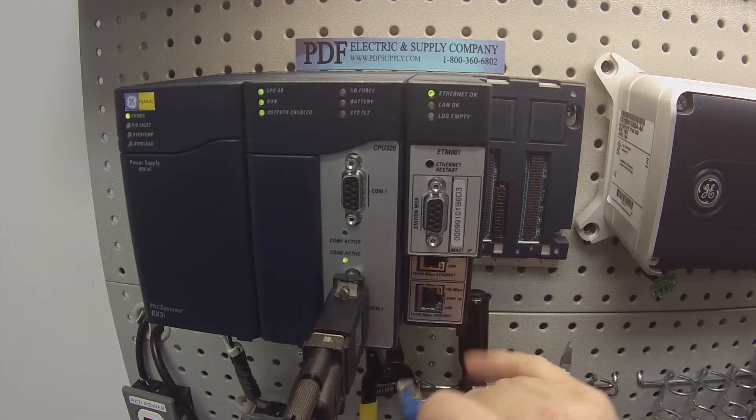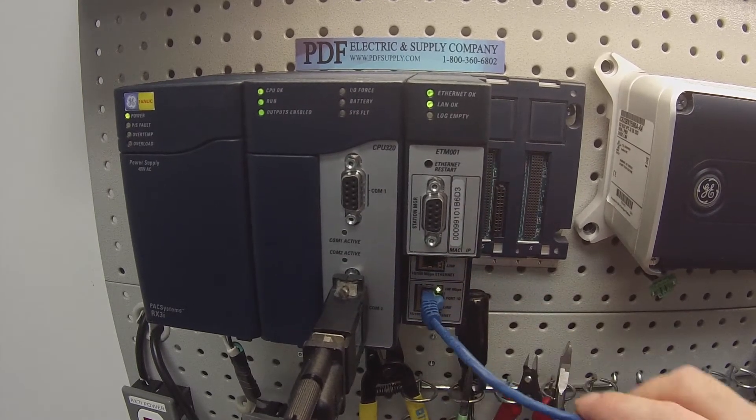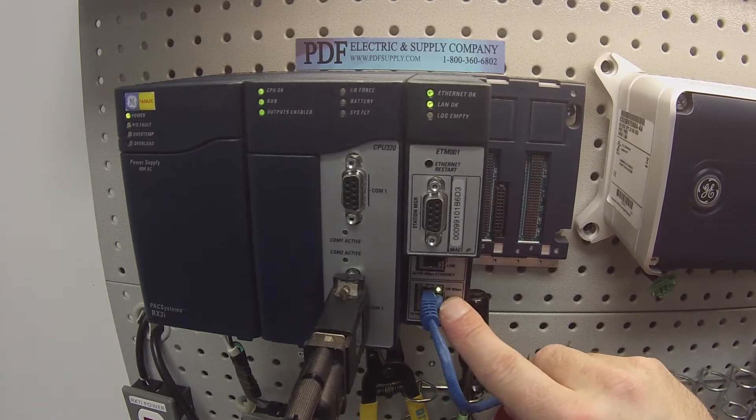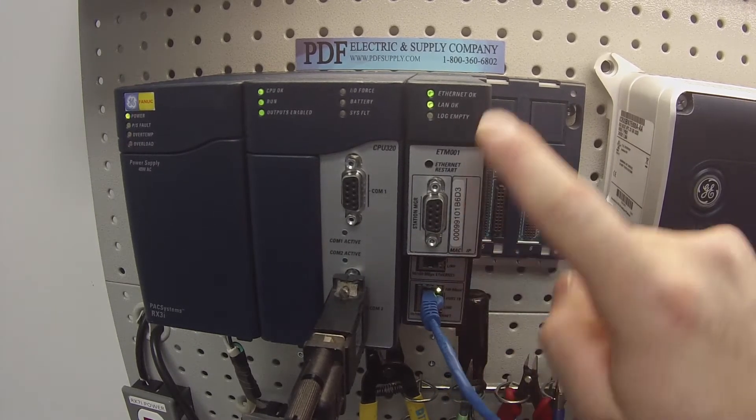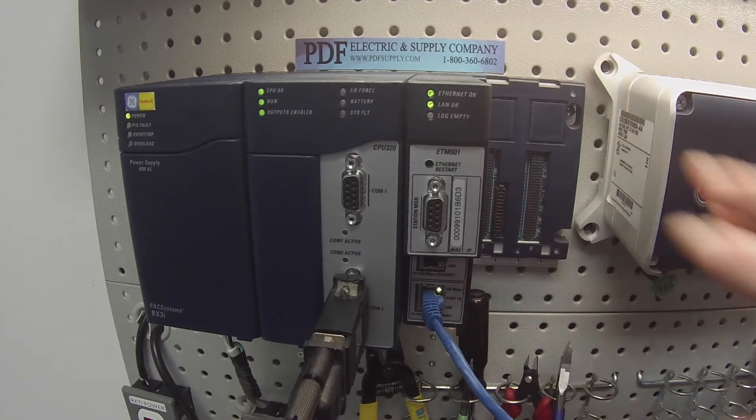Then, of course, we're going to check port number 2 or port 1B. Again, we plug it in. Make sure that the LEDs are on and that the LAN OK light is blinking. That means it's connected up and it sees it.